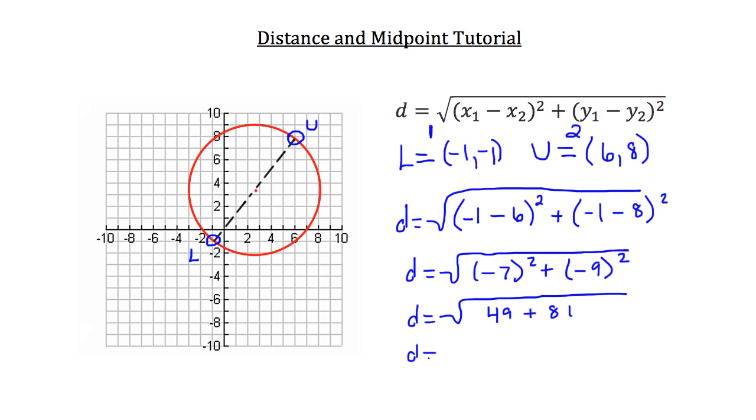Now we can add those two values together, and we'll get the square root of 130. Now you can't simplify that any further, so the distance across the circle in terms of the diameter is the square root of 130. That's the diameter of our circle.